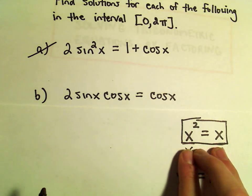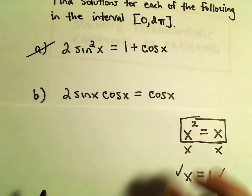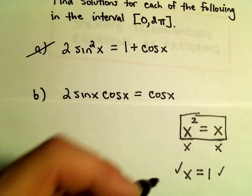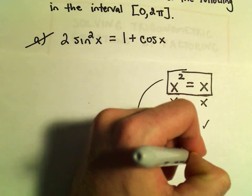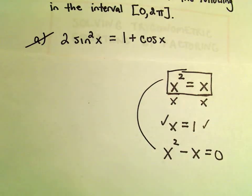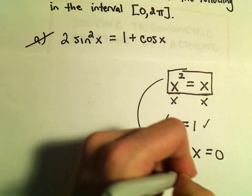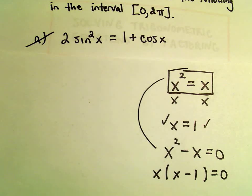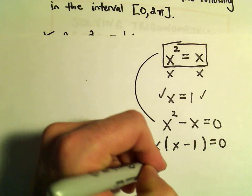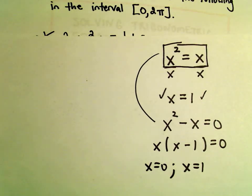But there are other solutions as well. Notice if you plug in x equals 0, x equals 0 is definitely also a solution to this equation. The way that you would get that is by making one side equal to 0. We can do that by subtracting x, and then you could factor the x out. When you set each factor to 0, you would get both solutions: x equals 0 and x equals 1.